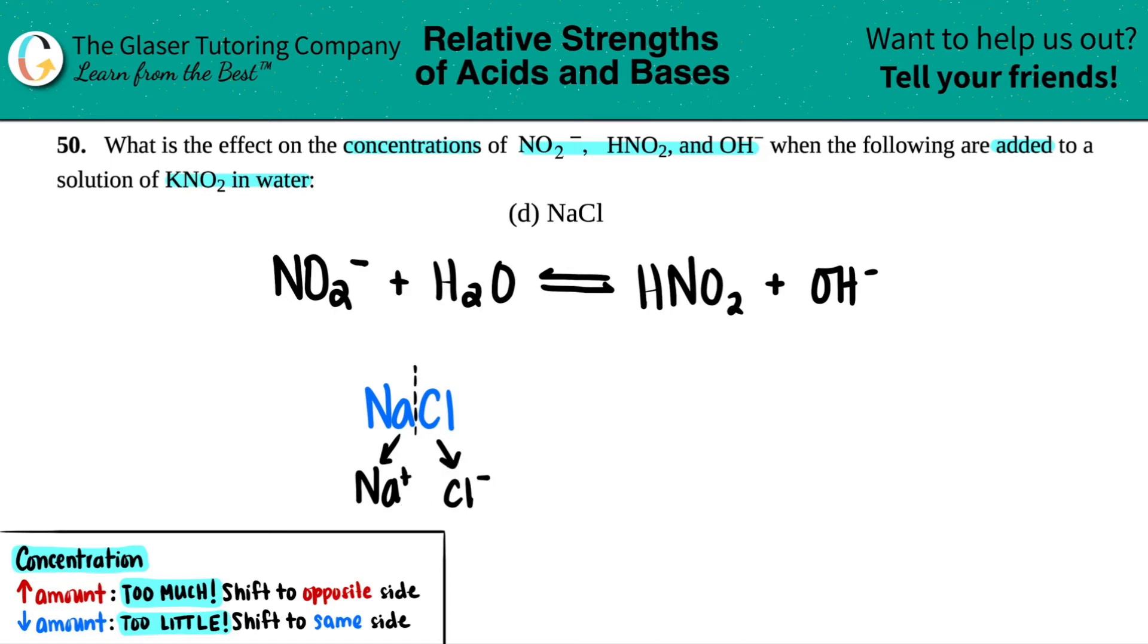So then you say to yourself, do these have any acidic or basic properties? Well, to find out, we always think of their conjugates, right? We think of a base or an acid that goes with Na and Cl.